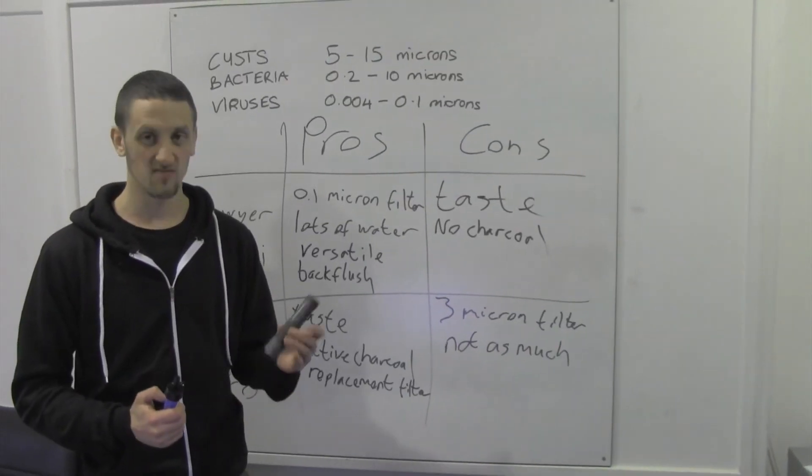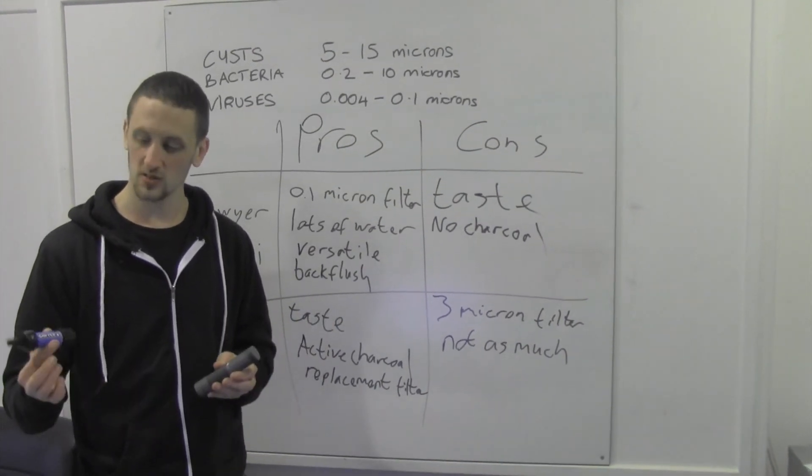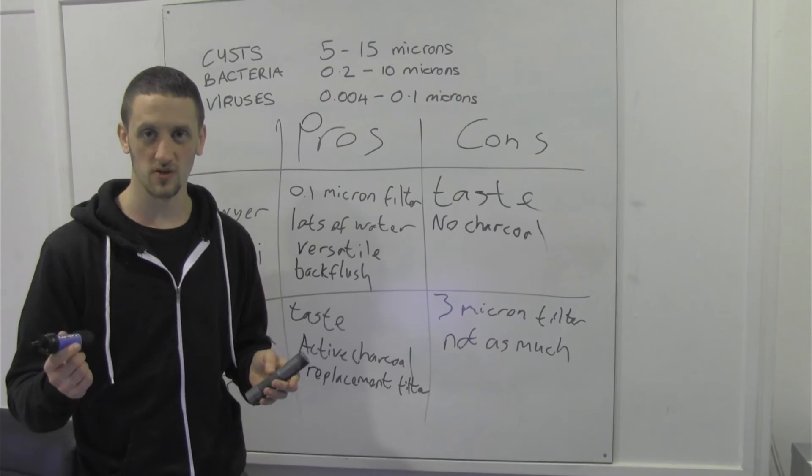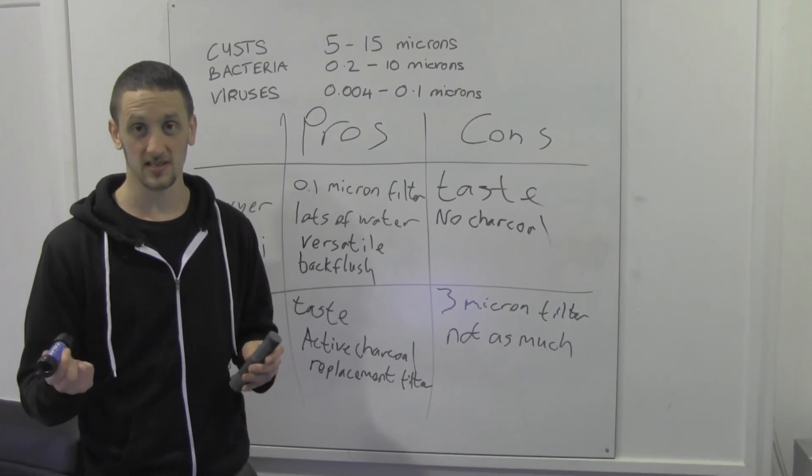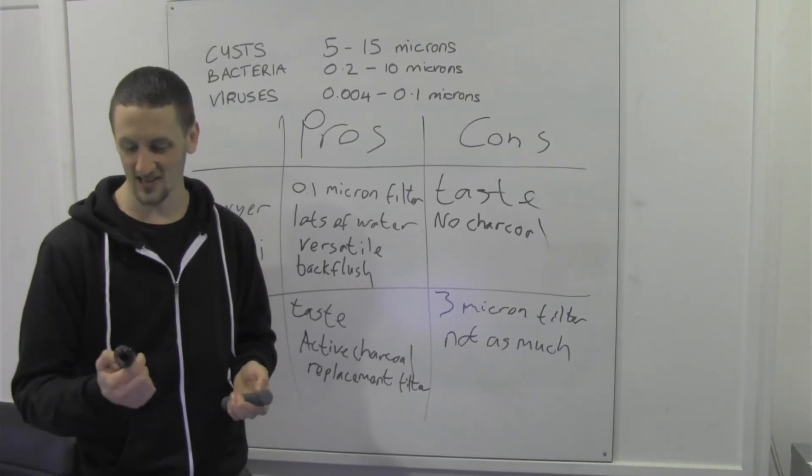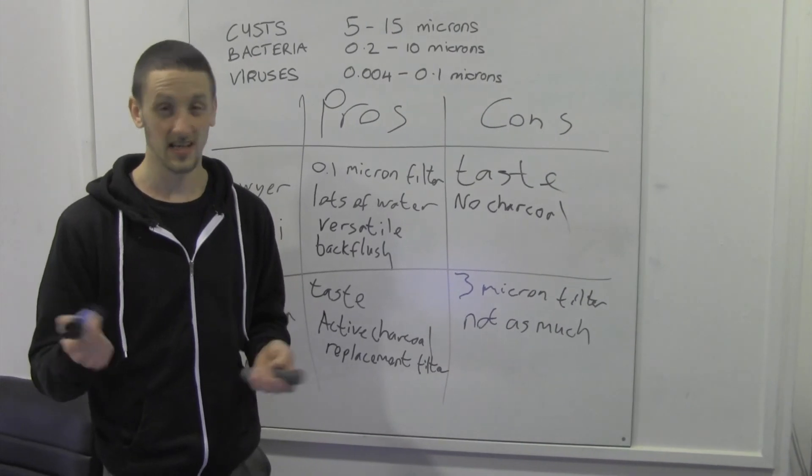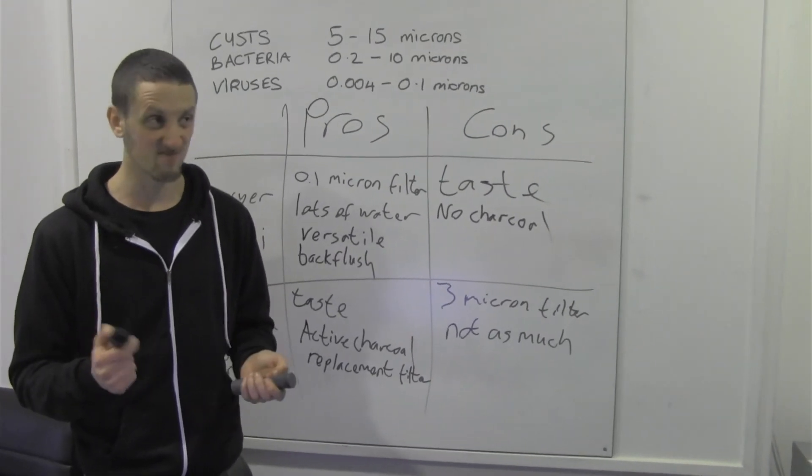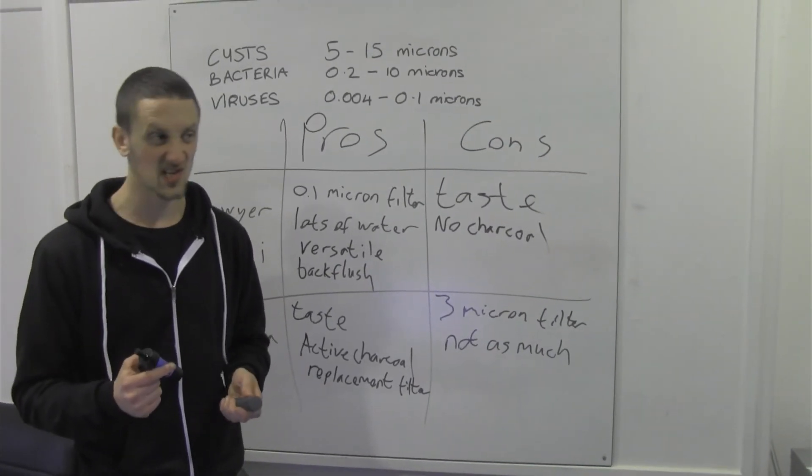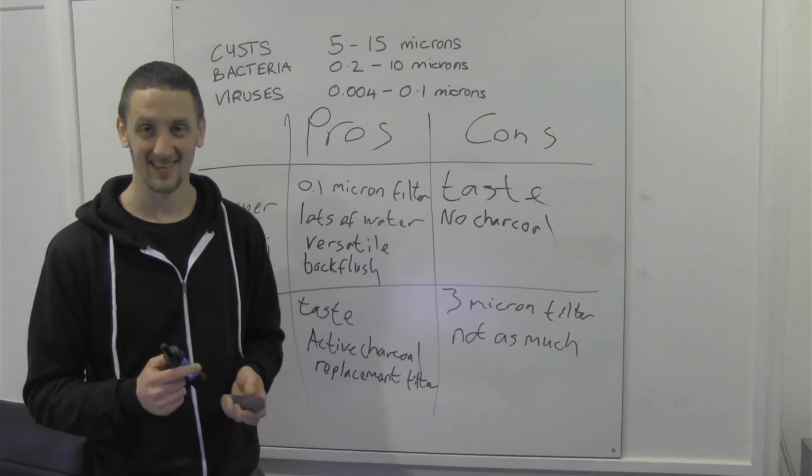Price wise, you're looking at low 20s for the Frontier Pro, and sort of 25 to 30 for the Sawyer, so a little bit more expensive, but for the sake of the price of one or two pints of water through the week, I'd probably more likely go for the Sawyer, and have that peace of mind that I can drink happily from sort of wherever, and I'm not going to drink up anything that's nasty.